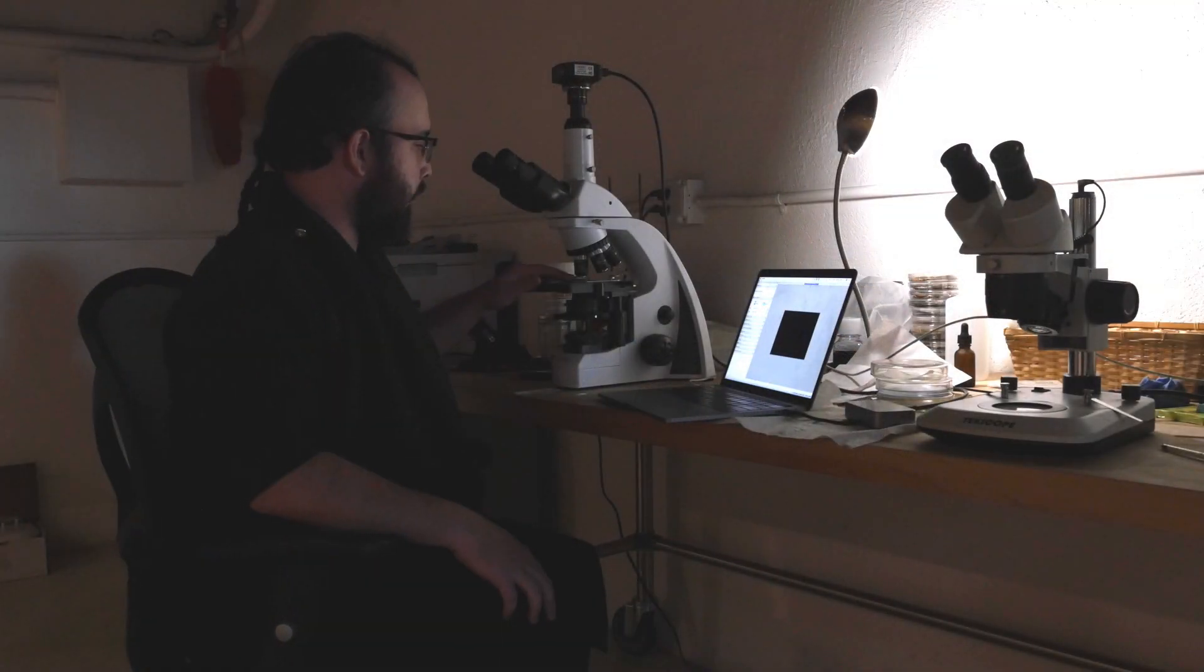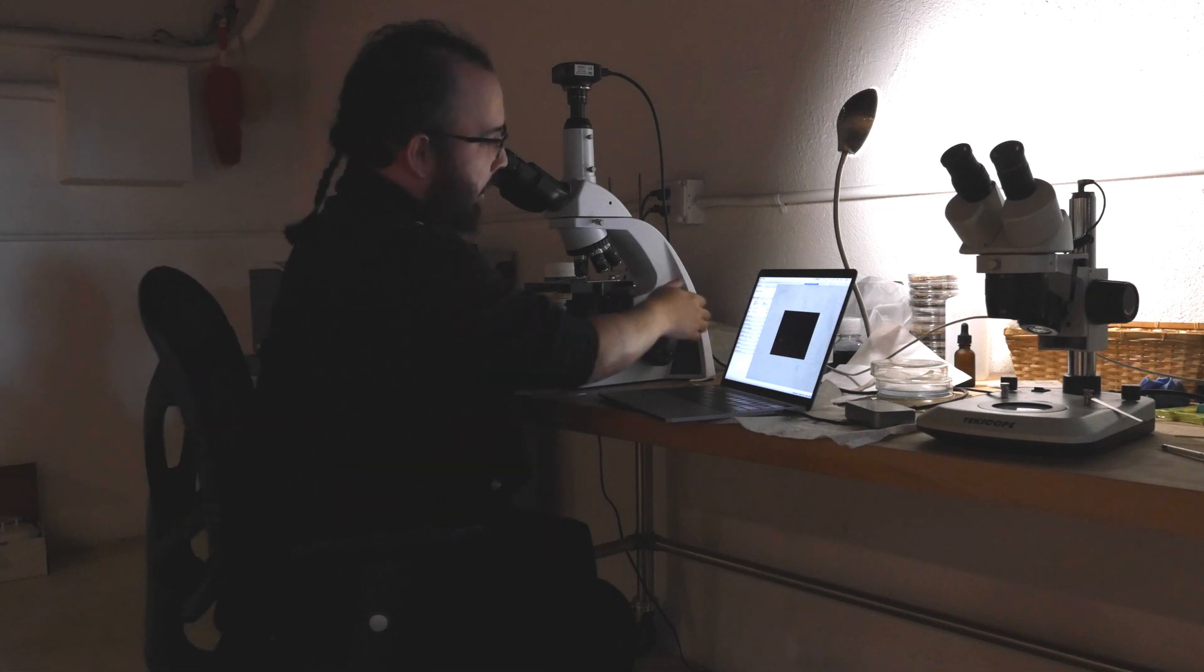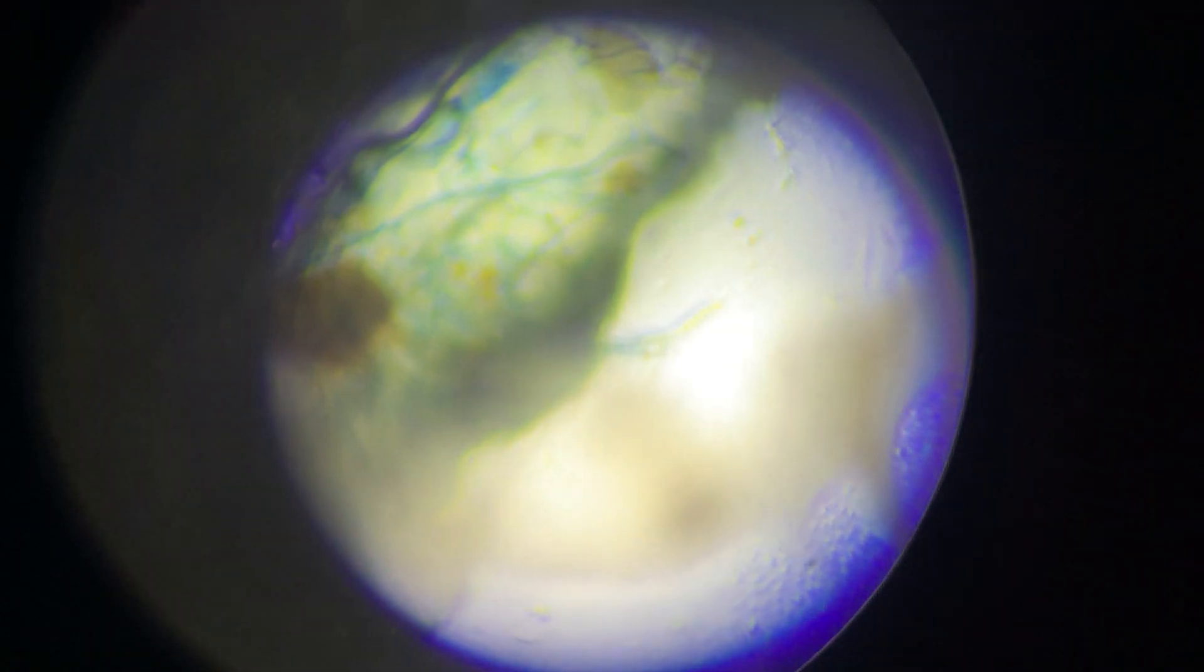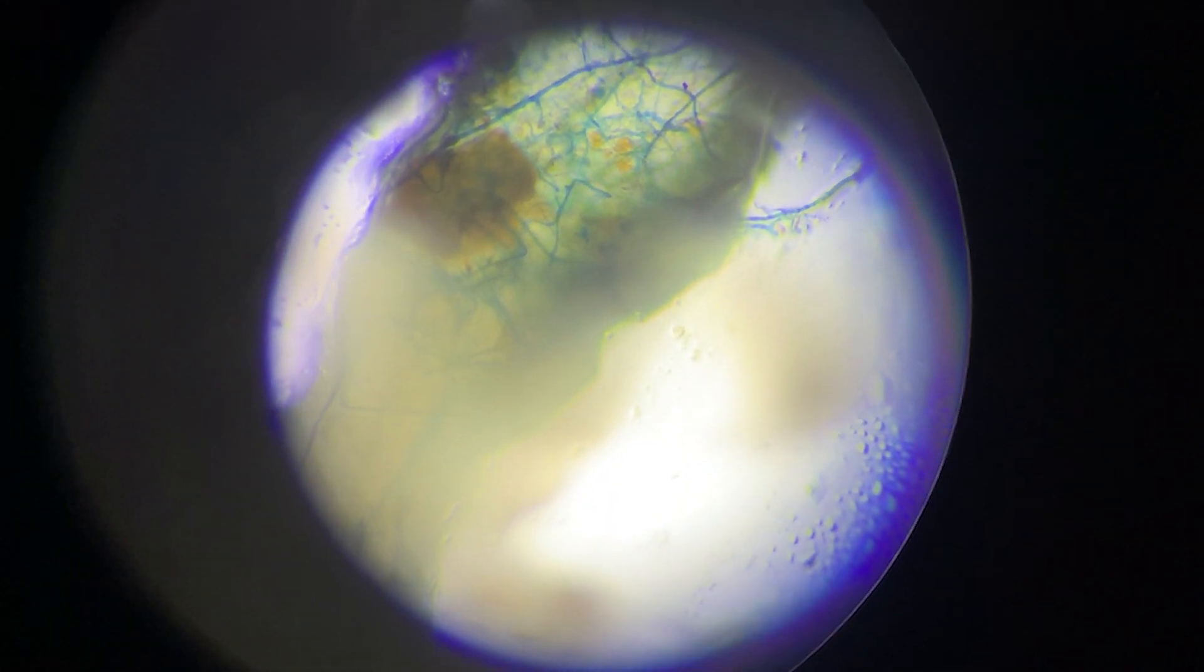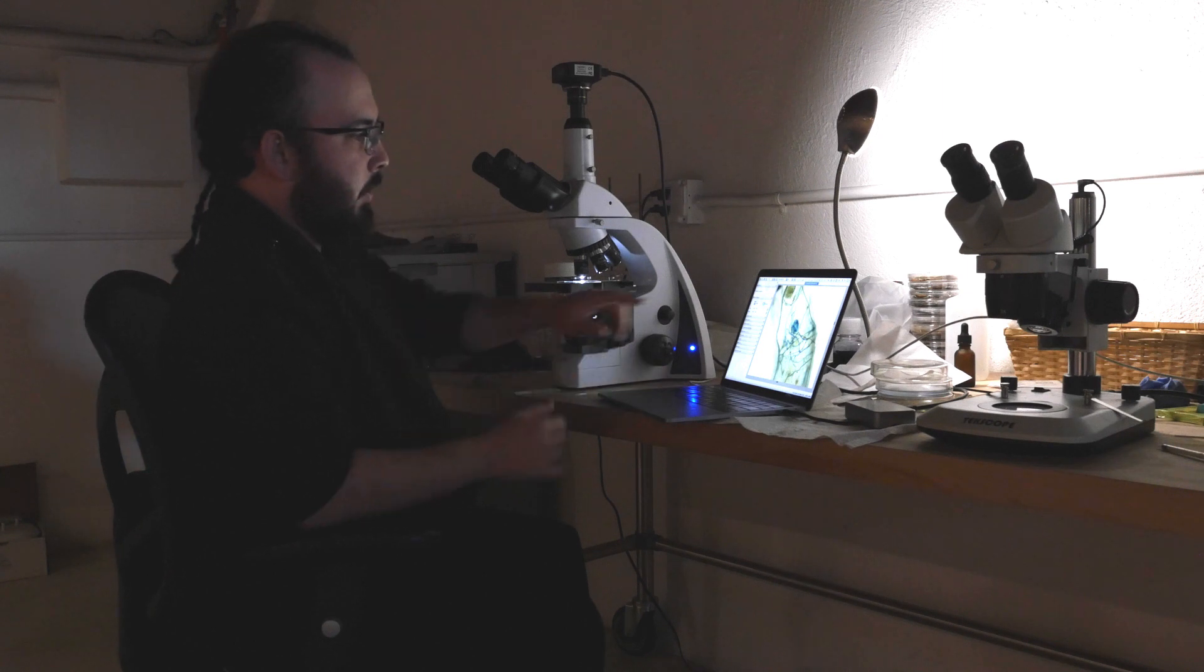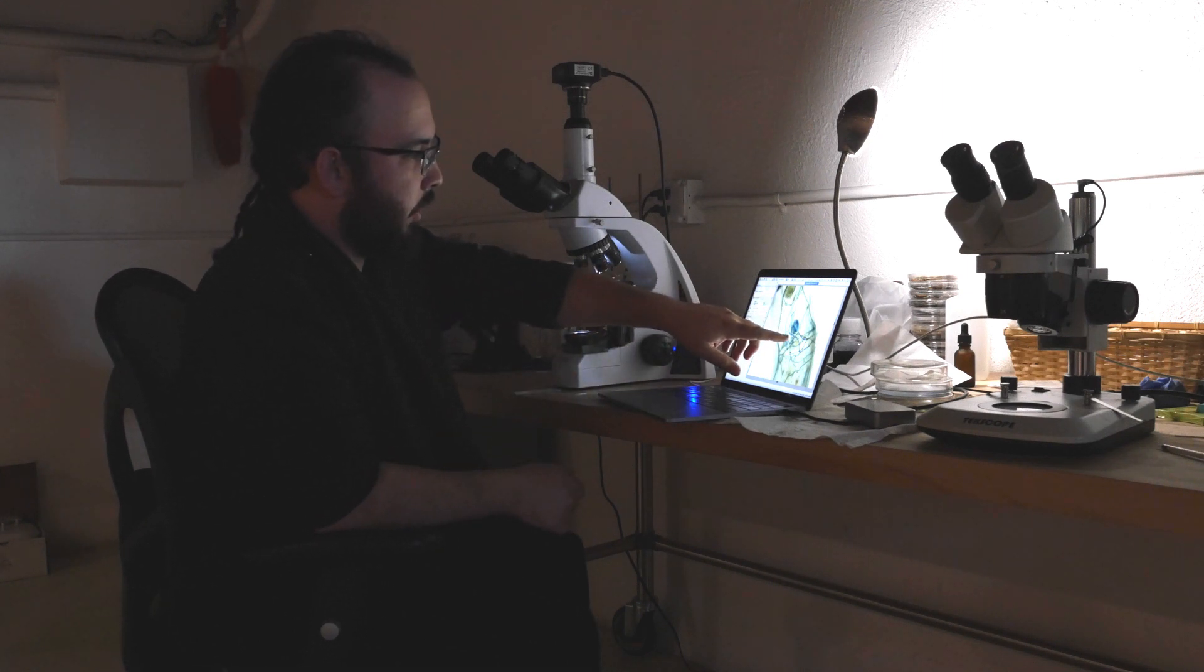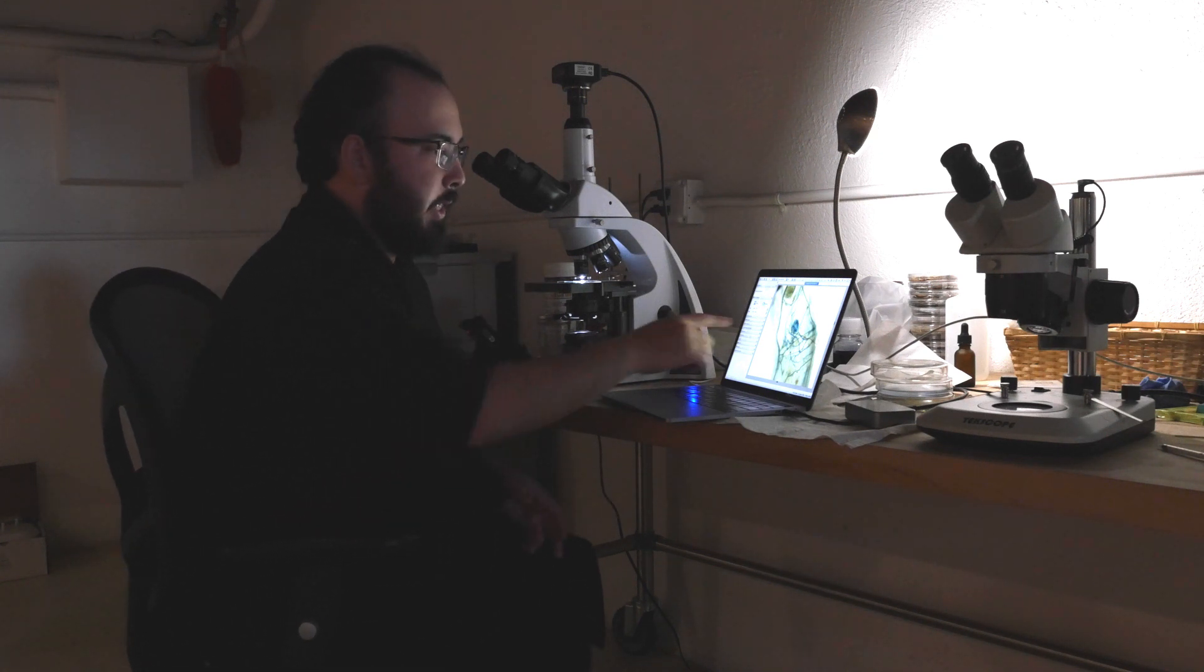We've got a sample of a root on our microscope and our microscope is connected to a camera, to some software. What we see here is the fungus itself. So we'll sort of blow it up. And you can kind of see these blue stained little webs or mycelium is the mycorrhizal fungus inside of the plant root itself.